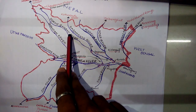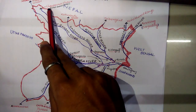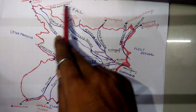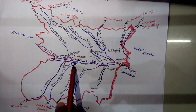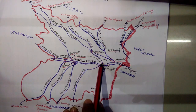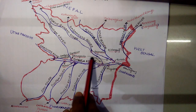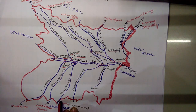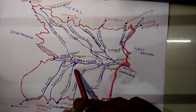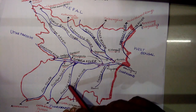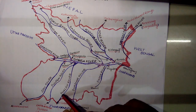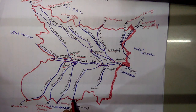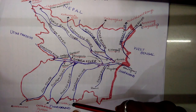Here we have the Budhi Gandak river, which comes from Chautarwa Chaur in West Champaran, and it merges into the Ganga at Khagadiya district. Here we also have the Falgu river — basically the Falgu river is a tributary of the Punpun river, so it also merges into the Ganga.